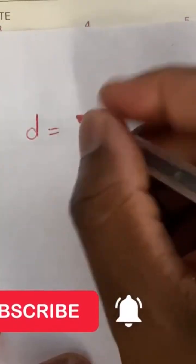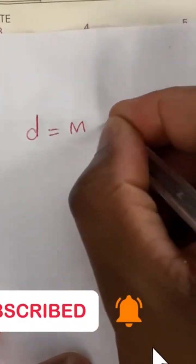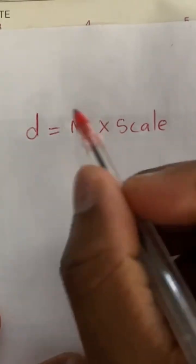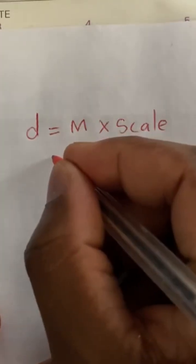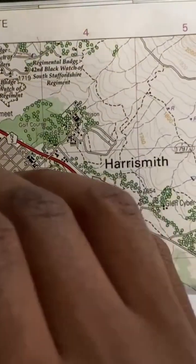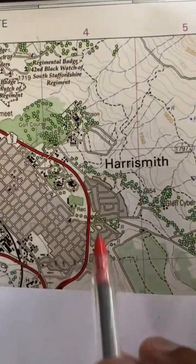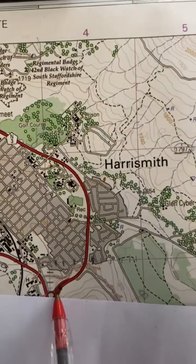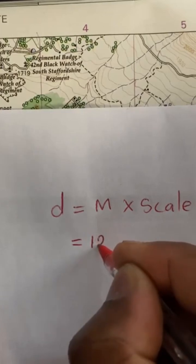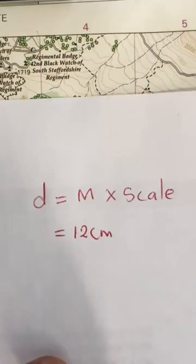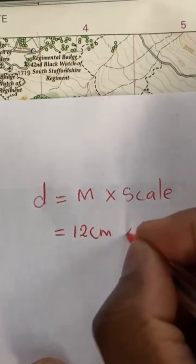D, which is distance, equals my measured distance times the scale. M will be my measured distance, which was the distance from the string — this is the distance of the road starting from one five three along the entry road, ending at C4. My total distance in centimeters was 12 centimeters, and the scale of the map is 1 to 50,000.